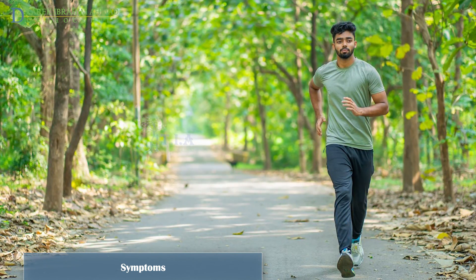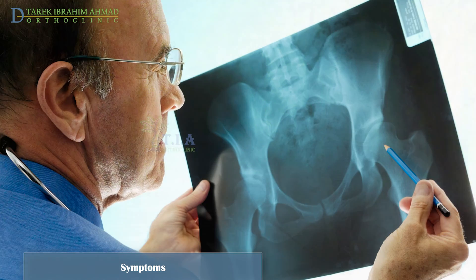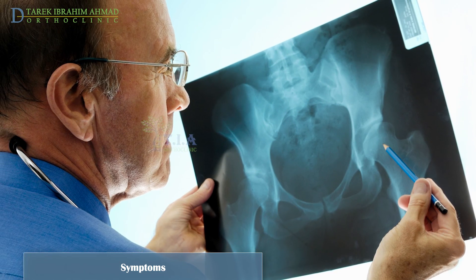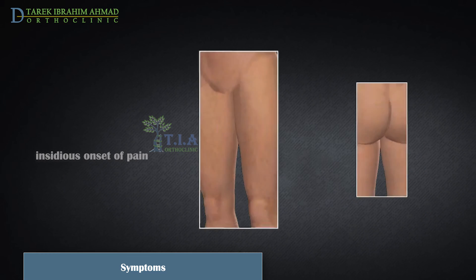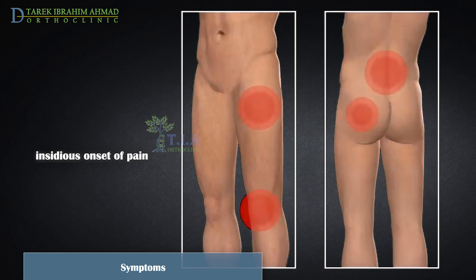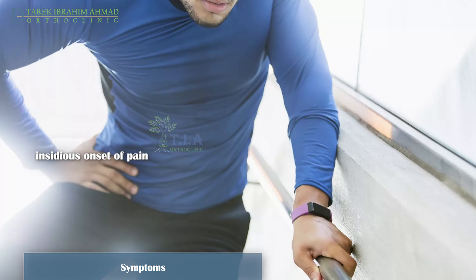Osteonecrosis of the hip develops in stages. Early on, there are often no symptoms, with the condition only being picked up incidentally on a scan or other radiological investigation. As the condition progresses and there are bone changes, most patients will experience pain, which is usually felt in the groin area but may radiate into the thigh or occasionally into the buttock.